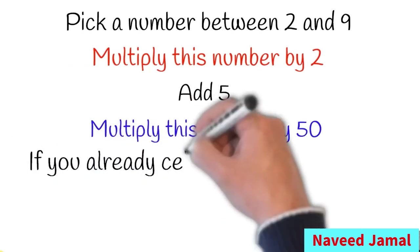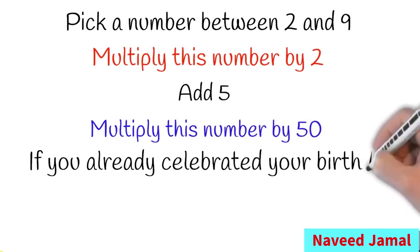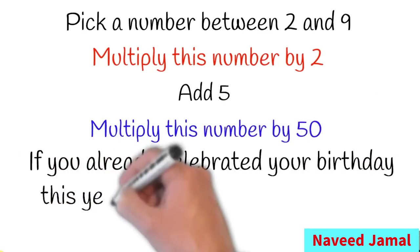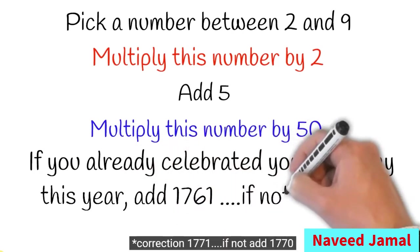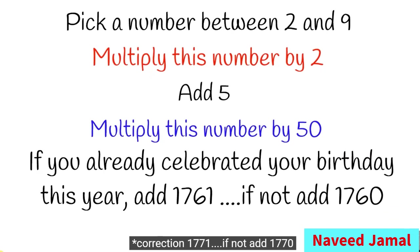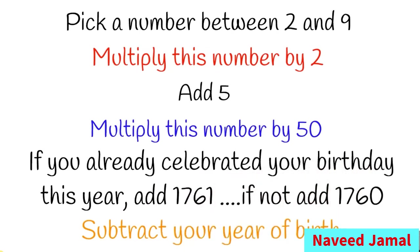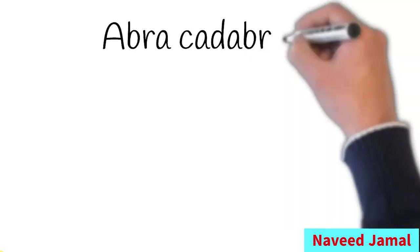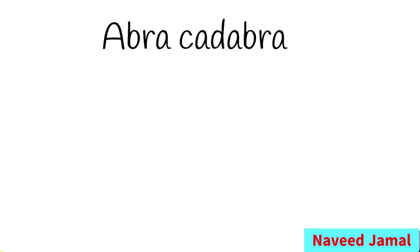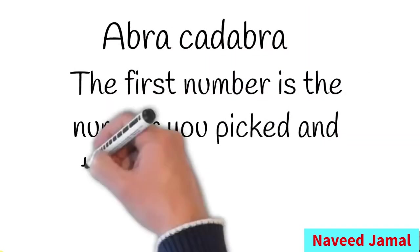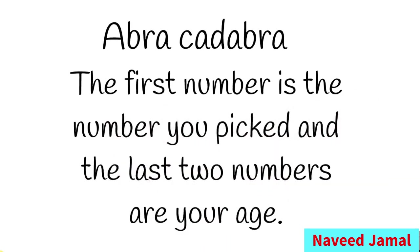If you have already celebrated your birthday this year, add 1761; if not, add 1760. Subtract your year of birth. The first number is the number you picked, and the last two numbers are your age — right!